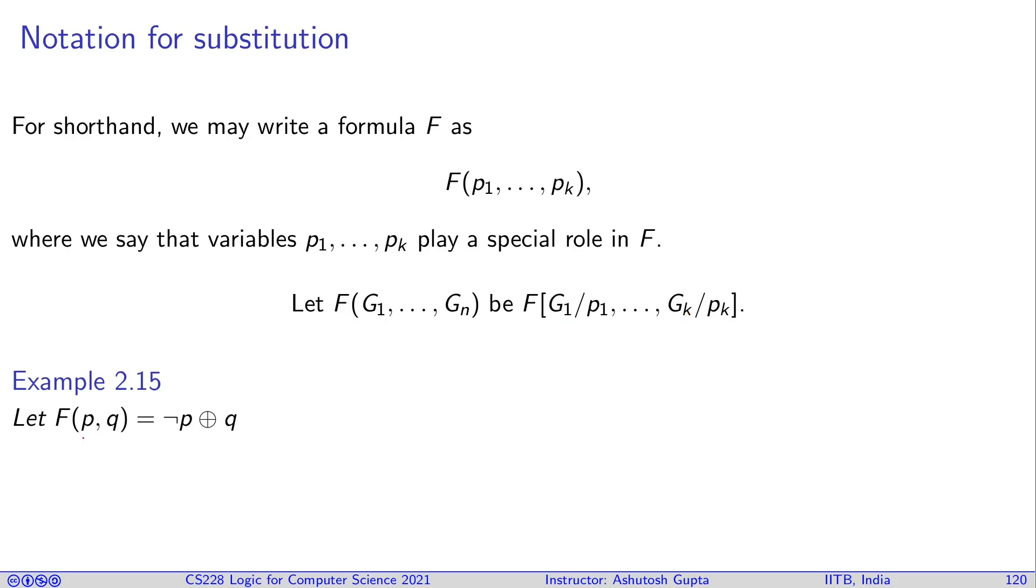For example, you have formula Fpq which is equal to not P XOR q. And if you write F of R or Q comma true, it gets replaced by this. This is a simple notation. And please, just pay attention to it in future when you see it, so it should not be confusing.